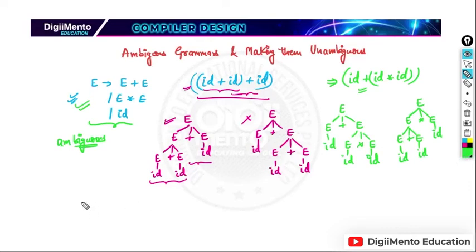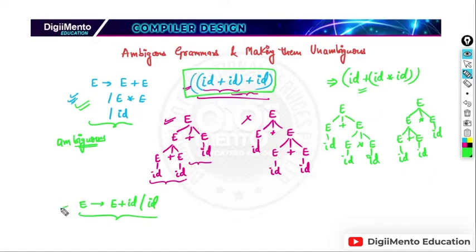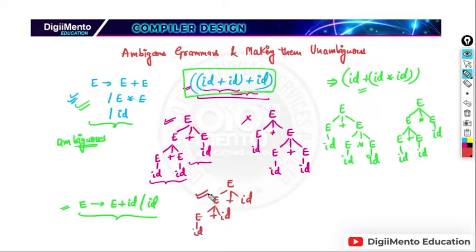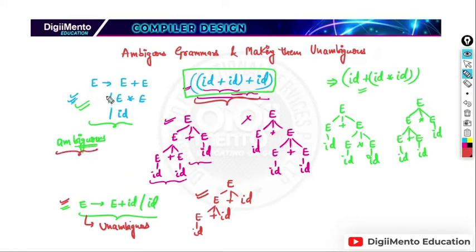Now suppose I write something like this: E derives E plus id, and id. If we want to generate the same expression from this grammar, we get the parse tree as E plus id, E plus id, and here also id. We are getting only one parse tree — not more than one. So we can say this grammar is unambiguous. We have converted the ambiguous grammar into an unambiguous grammar and can generate the same expression using this parse tree.